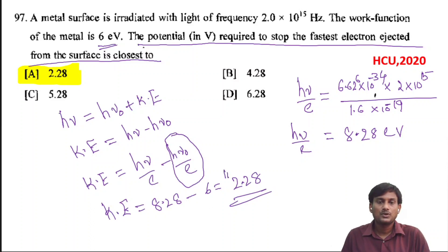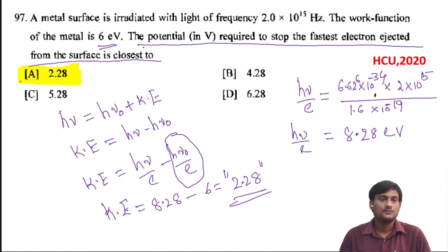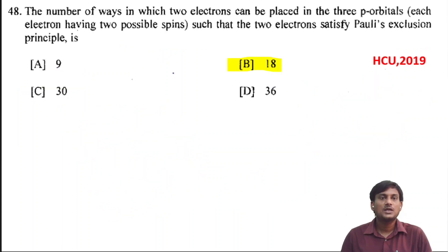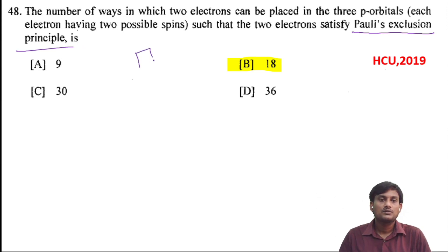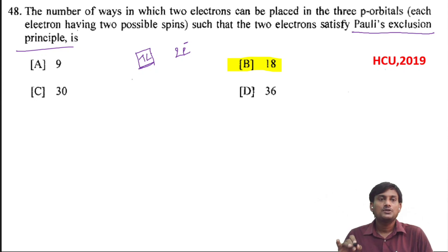This much potential we have to apply in order to stop the electron ejected from the metal surface. The number of ways in which 2 electrons can be placed in the 3p orbitals, each electron having 2 possible spins, such that the 2 electrons satisfy Pauli's exclusion principle. According to Pauli's exclusion principle, one orbital can accommodate a maximum of 2 electrons with paired spins.